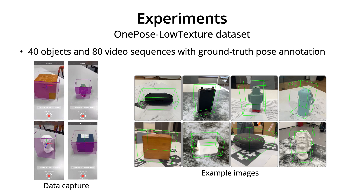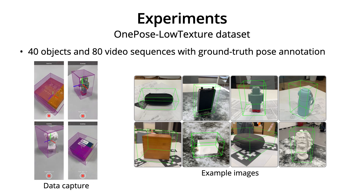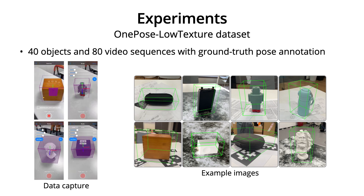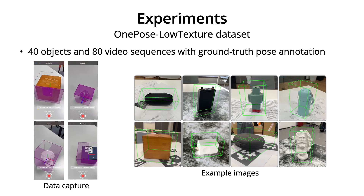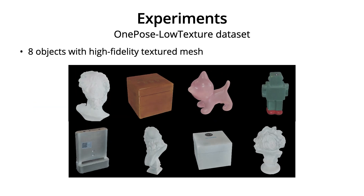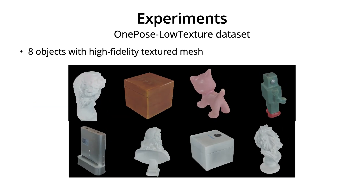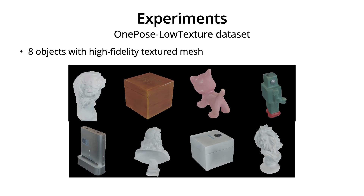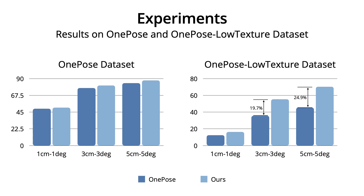To further demonstrate the capability of our method in real-world scenarios, we collect a new evaluation set named OnePose-LowTexture, which comprises 80 sequences of 40 low-textured objects. Additionally, to compare our method with CAD model-based methods, we obtain high-fidelity 3D models of 8 objects with a commercial 3D scanner. We compare our method with OnePose on the OnePose dataset and the proposed low-texture dataset. Our method outperforms OnePose, especially on the low-textured dataset, demonstrating the superiority of the keypoint-free design in the whole pipeline.